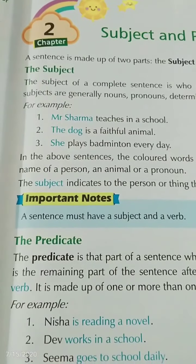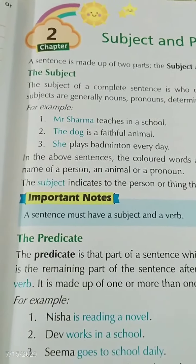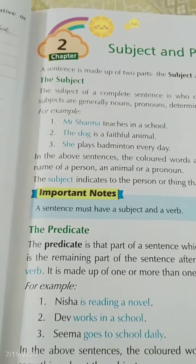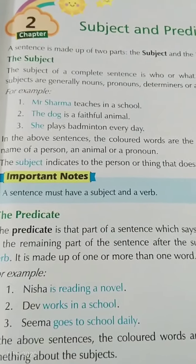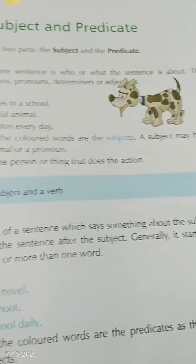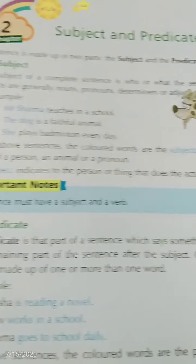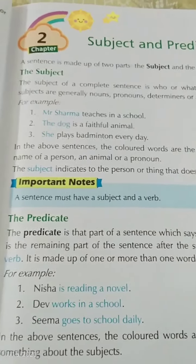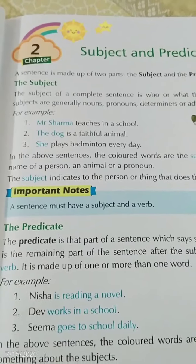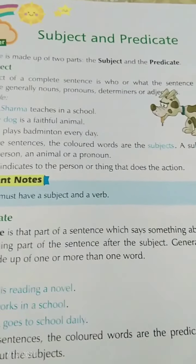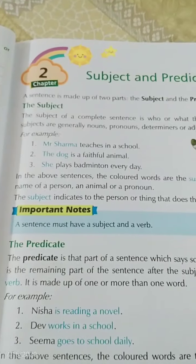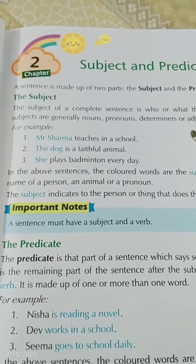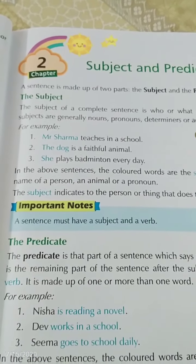Example one: Mr. Shirmer teaches in a school. The dog is a faithful animal. She plays badminton every day. In the above sentences, the colored words are the subjects. Subjects may be the name of a person, an animal, or a pronoun. A subject indicates the person or thing that does the action.